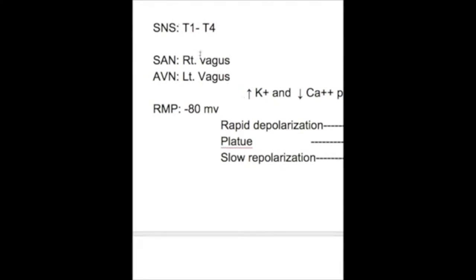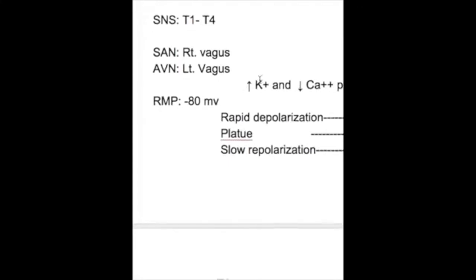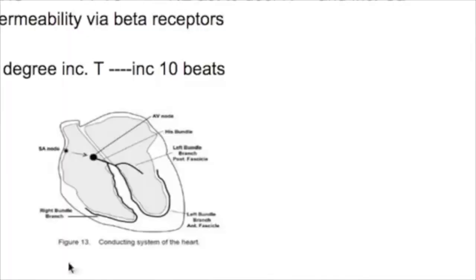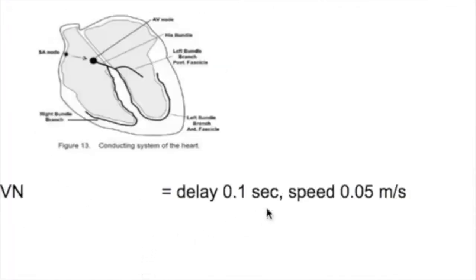The vagus is inhibitory to the heart because it increases potassium conductance and decreases calcium permeability, thereby slowing the heart. The impulse in the AV node is delayed for 0.1 second. The speed of conduction in the AV node is 0.05 meters per second, which is the slowest in the entire conducting system.